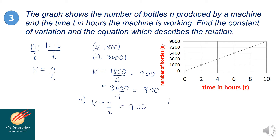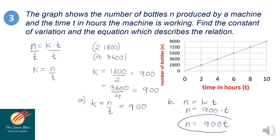Next, to find the equation that describes the relation: recall that n equals k times t. Substituting k equals 900, I have n equals 900 times t. Therefore, n is equal to 900t. This is the equation that describes the relation.